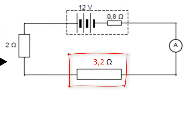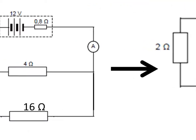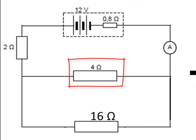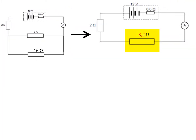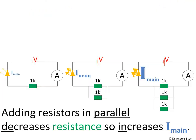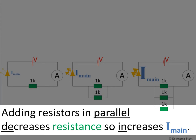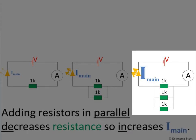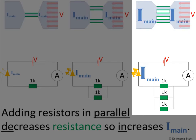Notice that the equivalent resistance is less than the smallest resistance of the parallel section — in this case, 3.2 is smaller than 4. That's because adding resistors in parallel always decreases overall resistance. Adding resistors in parallel is like making the pipe thicker — a thicker pipe lets the charges flow easier, in other words, makes less resistance.